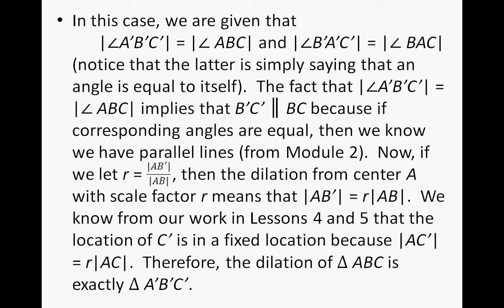Now, if we let our scale factor R equal to the line length AB' over AB, then the dilation from center A, notice it's not center O, we've just replaced it with center A because that is one of the points on our triangle. The scale factor means that the line length AB' is equal to the scale factor times the line length of AB. We know from our work in lessons 4 and 5 that the location of C' is in a fixed location because the line length of AC' is equal to the scale factor times the line length of AC. Therefore, the dilation of triangle ABC is exactly the triangle A'B'C'.